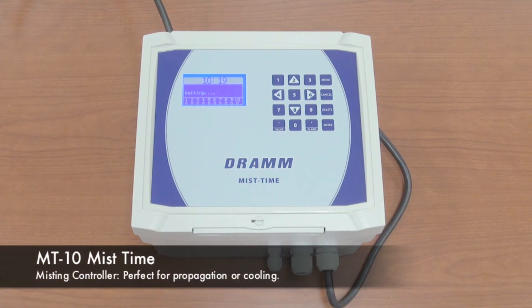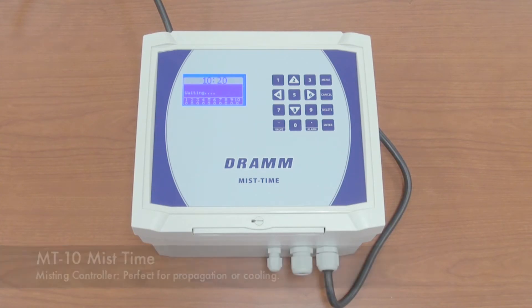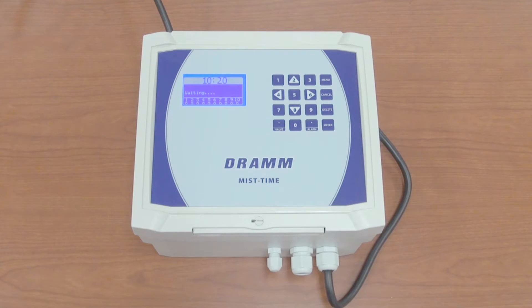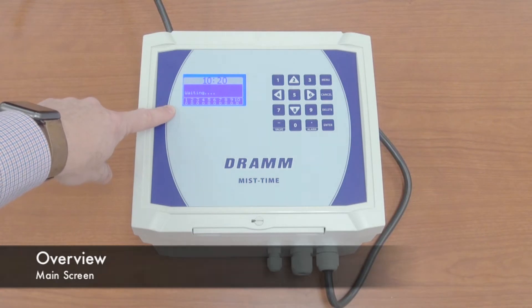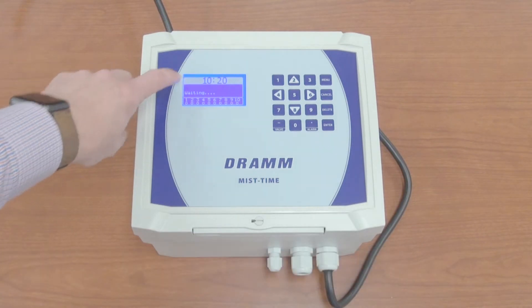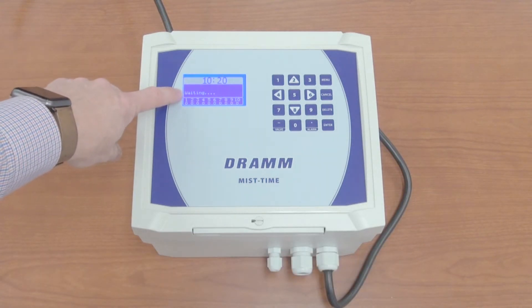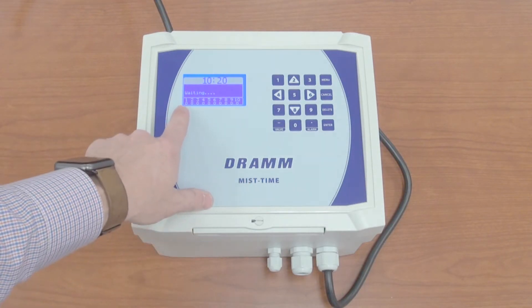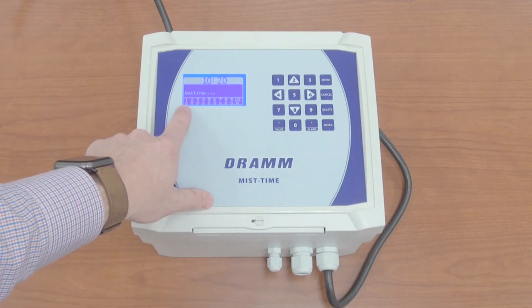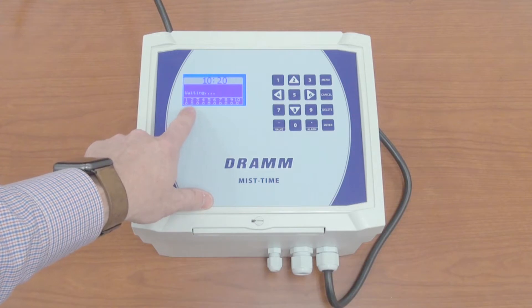The MT-10 is an easy to use misting controller that can be used for both mist propagation as well as cooling. This is the main screen that you'd see active all the time, showing the current time as well as the status of the controller and what valves are active, if any. When a valve is active, this little zero will turn into a solid dot.